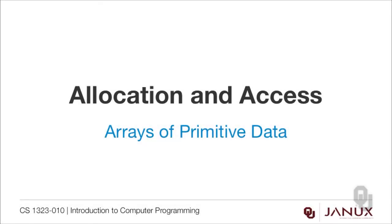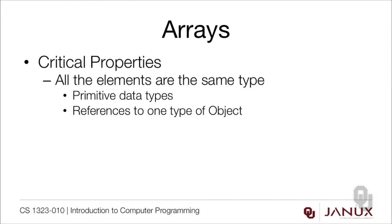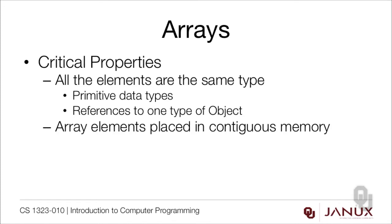Let's continue our study of arrays of primitive data by looking at allocation and access issues. Here are the critical properties of arrays. All of the elements in an array must be of the same type — this could be a primitive data type like int or double, or it could be references to a type of object, for example references to Strings. Array elements have to be placed into contiguous memory in the computer. This is a very important limitation and is the cause of a lot of the challenges we have working with arrays.